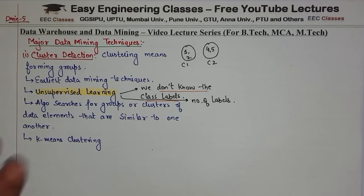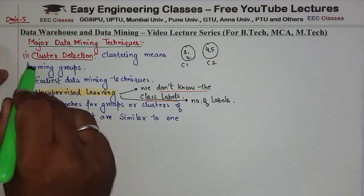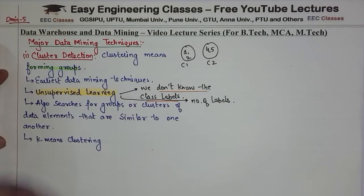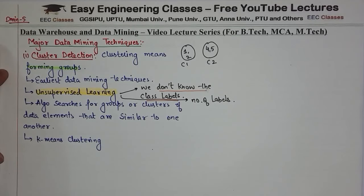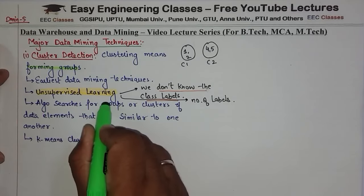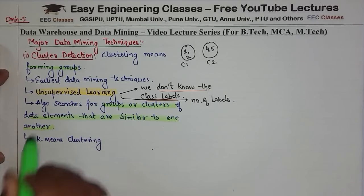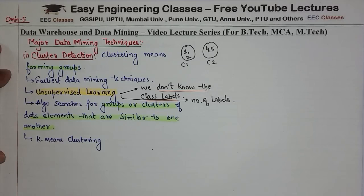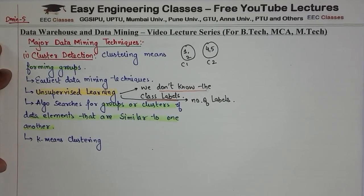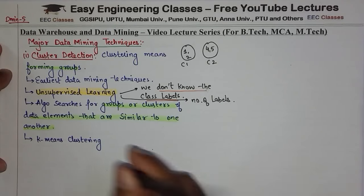Clustering is one of the earliest data mining techniques, and it means forming groups. The algorithm searches for groups or clusters of data elements that are similar to one another. These similar data elements are added into one group. A classical example of clustering is K-means Clustering.